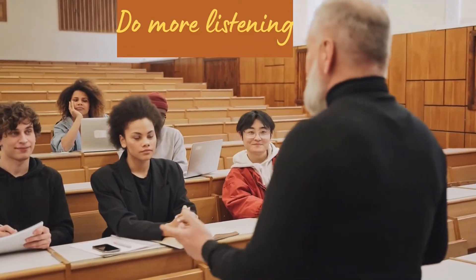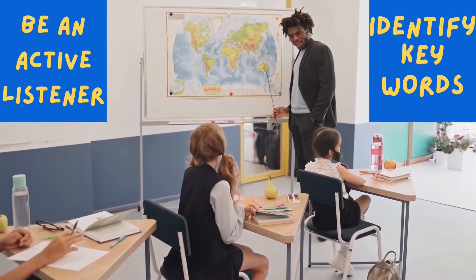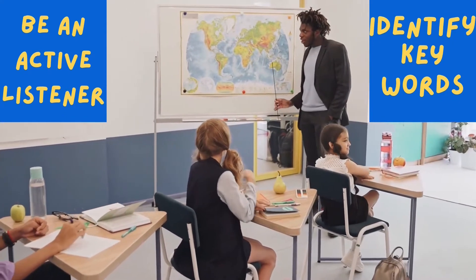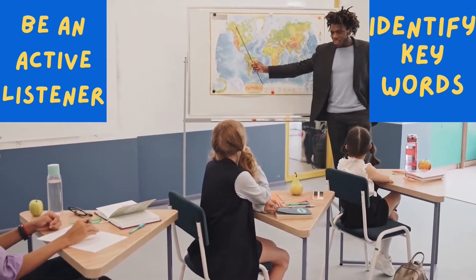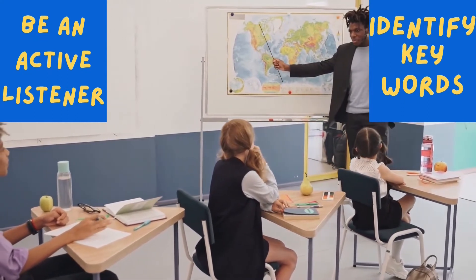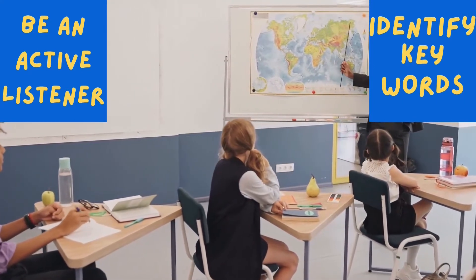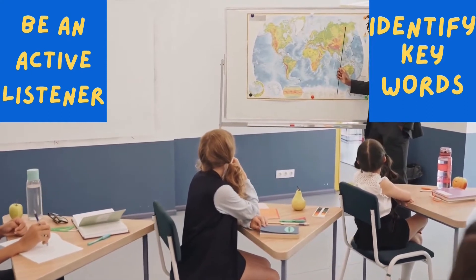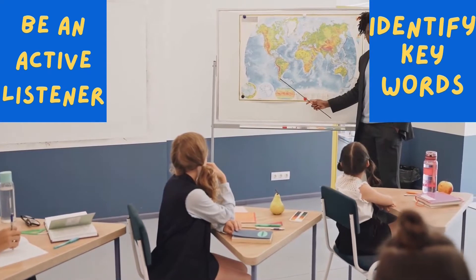For instance, notice when words or phrases are being repeated. Underline or circle in your notes any words that seem to be significant. Some teachers may mention lots of dates and facts in class but only write the key ones on the board. Other teachers might not write anything down but may repeat a certain date or piece of information. That's a clue that it's probably important. You have to catch those clues.